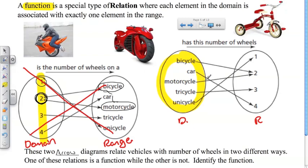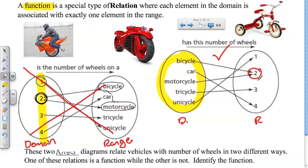Now let's check the second diagram. Bicycle is associated with two wheels, motorcycle with two wheels, tricycle with three, unicycle with one, car with four. Each element in the domain is associated with only one element in the range, so this one is a function. Note that two wheels is associated with more than one element in the domain — bicycle and motorcycle — and that's okay. We just can't have a domain element pointing to more than one range element.